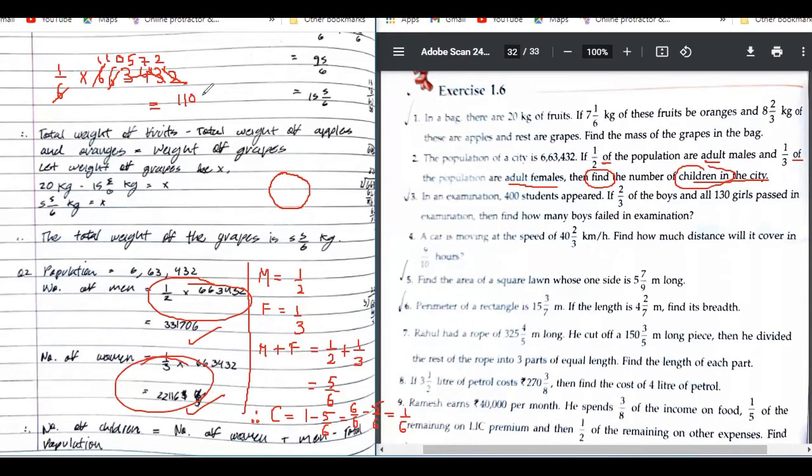So is your answer 110,572? That is the number of children in the city.